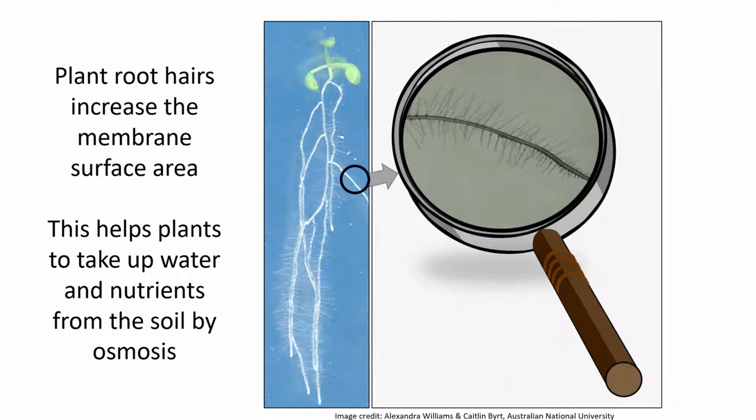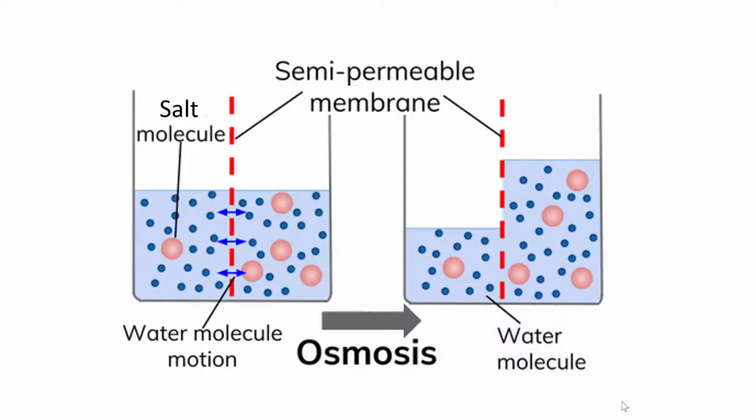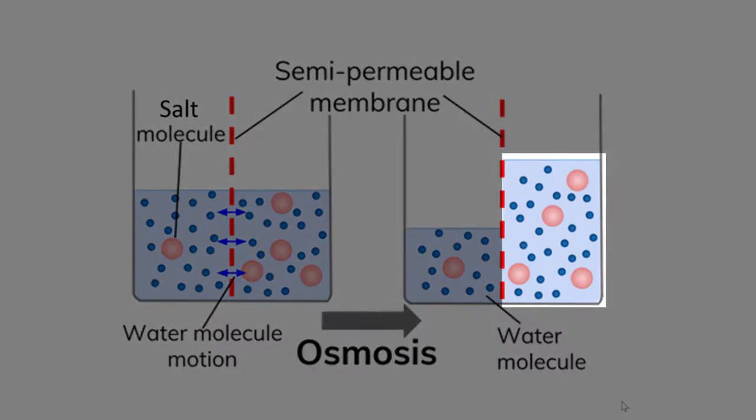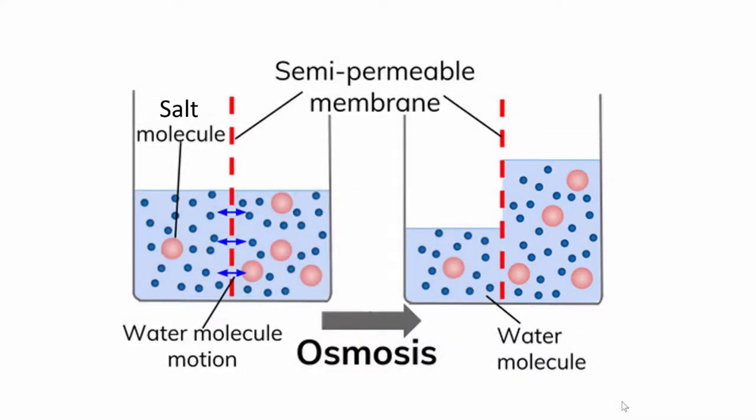Osmosis also enables the creation of pressure. If you fill a beaker with water, separate the beaker with a suitable semi-permeable barrier and dissolve salt into one of the compartments, the water level in the compartment with salt rises. This happens because osmotic pressure is greater than the pressure exerted on the surface of the water by the atmosphere.